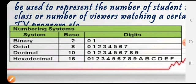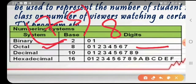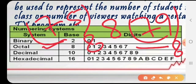The octal number system has 8 digits: 0, 1, 2, 3, 4, 5, 6, 7 — total 8 digits, so the base is 8. How do we represent the base or radix? If you write the number 75 with base 8, that is a correct octal number. But if you write 79 with base 8, that is incorrect, because 7 is included in octal digits but 9 is not represented in the octal number system.